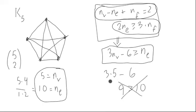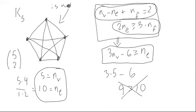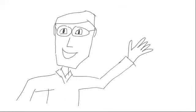Since we assumed the graph was planar and got a false statement, what we assumed must have been false to begin with. This means that this graph in particular is not planar. So try as you might to rearrange the edges, you'll always have some kind of crossing over. Thanks for watching.